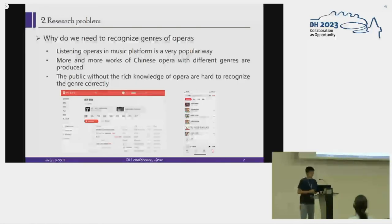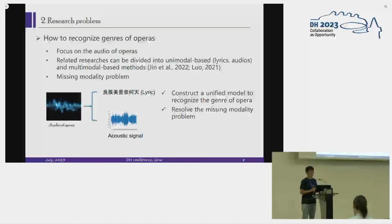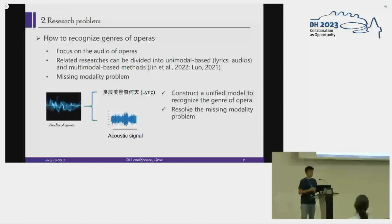The documentation of operas can be audio or video, and we focus on the audio in this work. We expand our scope to genre recognition of audios, such as music genre recognition, not limited to opera. In essence, audio is multimodal data — it can be seen as a combination of lyrics and acoustic signals. Related research can be divided into unimodal-based and multimodal-based. In unimodal-based studies, researchers construct models to recognize genre based on text semantics or acoustic features. However, if we only use audio or lyric-based methods, the complementary semantic information from the other modality will be ignored.